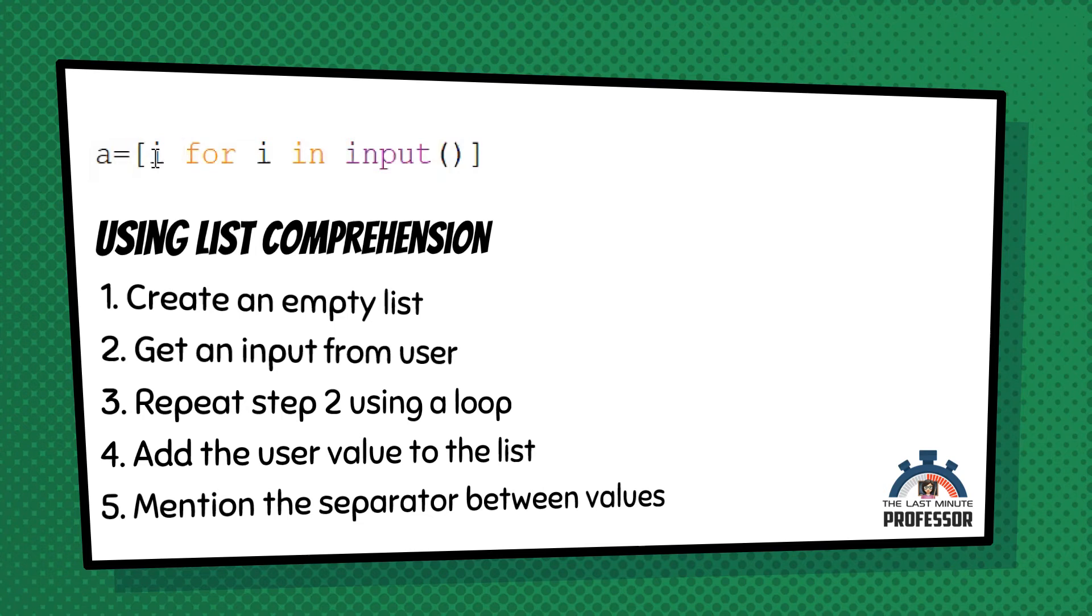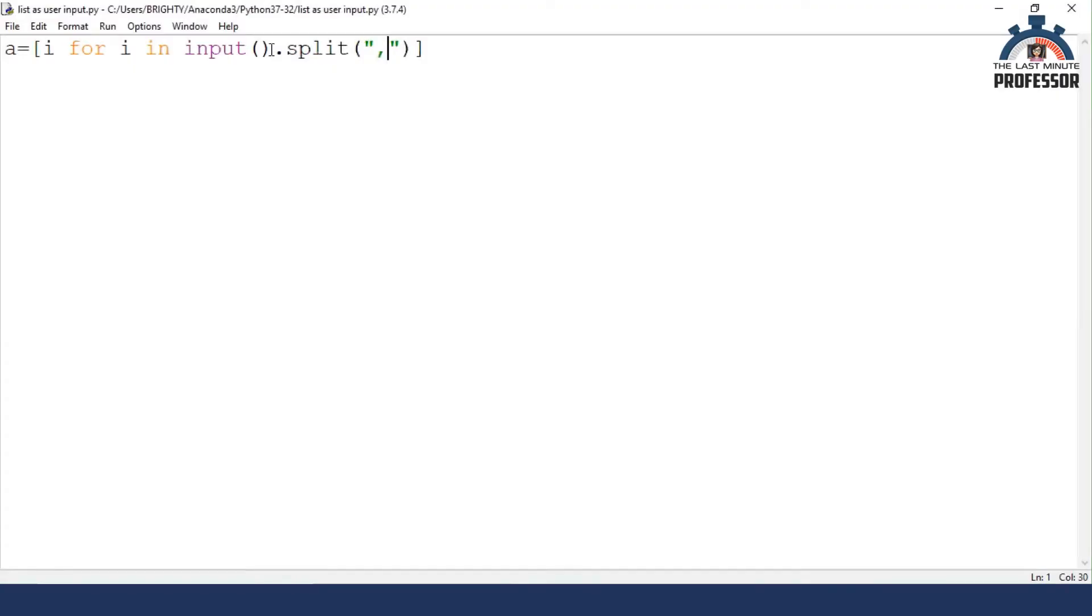So how can we separate by that separator? So the string is there. I can use the split function. So dot split of. When should I split? When it encounters a comma. So that I have to give within quotes. So I'm giving within quotes, comma. I'm saving it and running it.